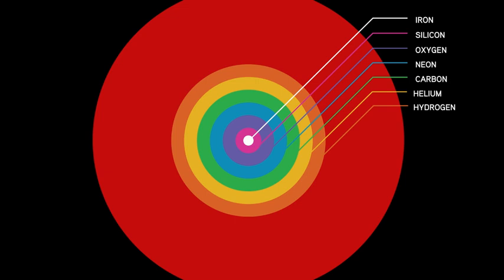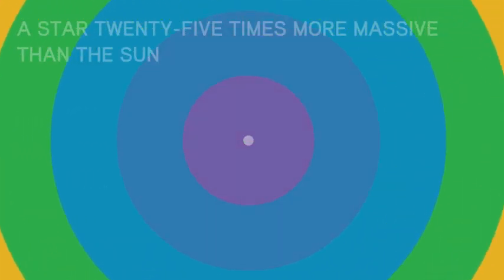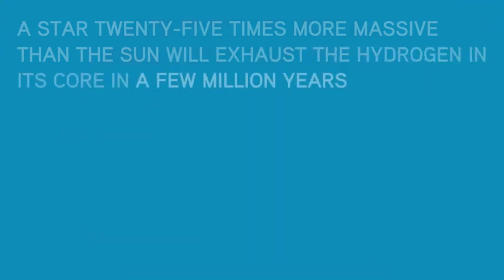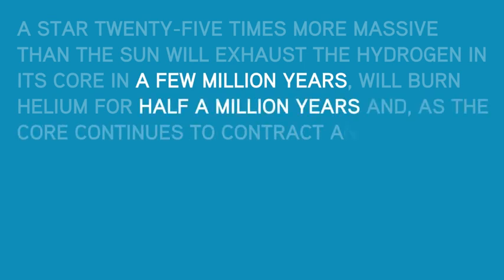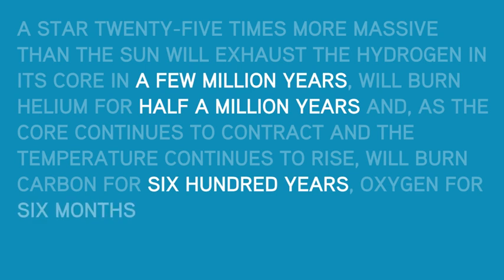I'd like to read to you Cesare Emiliani's wonderful description of the final few million years in the life of a dying huge star. A star 25 times more massive than the sun will exhaust the hydrogen in its core in a few million years, will burn helium for half a million years and as the core continues to contract and the temperature continues to rise will burn carbon for 600 years, oxygen for six months and silicon for one day.